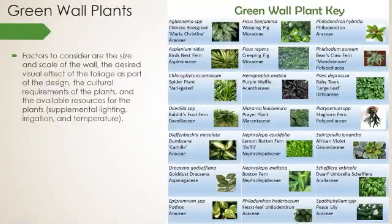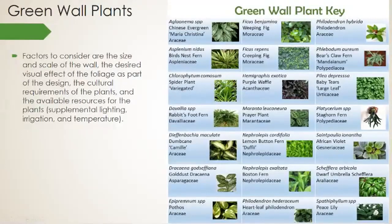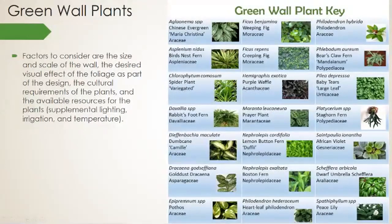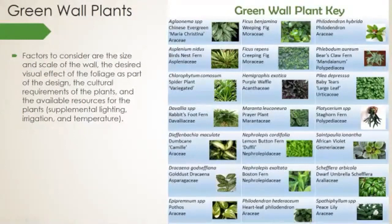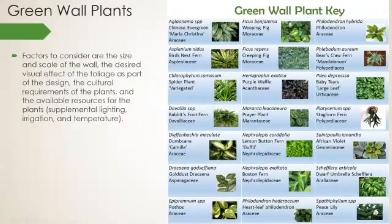When talking about plant selection, we need to consider the size and scale of the wall — how big those plants are going to get and how much space they'll have. The desired visual effect of the foliage as part of the design is important, as well as the cultural requirements of the plants and available resources: supplemental lighting, irrigation, and temperature, maybe even humidity, though these plants create their own micro pocket of humidity. Conditions indoors are going to be vastly different than outdoors — two very different things to think about.